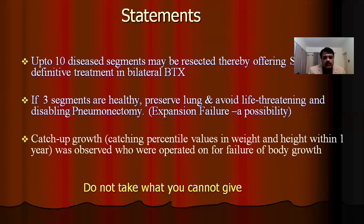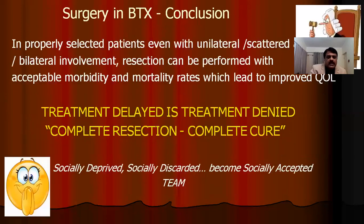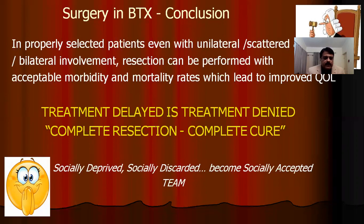Do not take what you cannot give. In properly selected patients with unilateral, scattered, or bilateral bronchiectasis, resection can be performed with acceptable morbidity and mortality. Justice delayed is justice denied — and treatment delayed is treatment denied. We must educate our pulmonology colleagues that early referrals achieve optimum results. Complete resection equals complete cure. Together we can convert the socially deprived and socially discarded to be socially accepted.